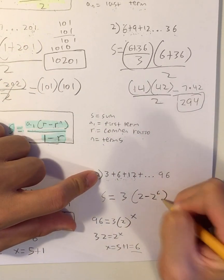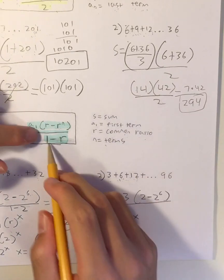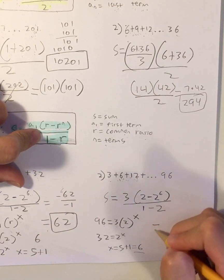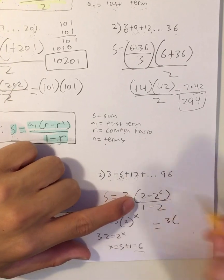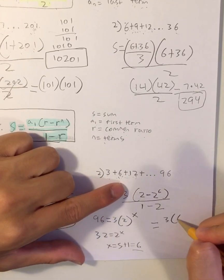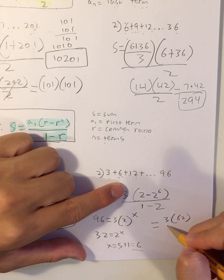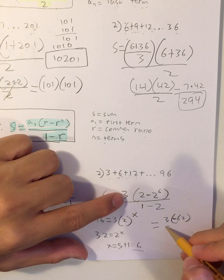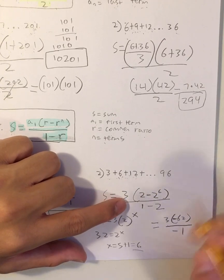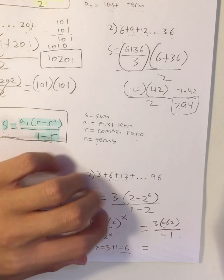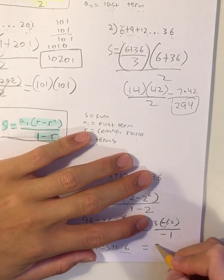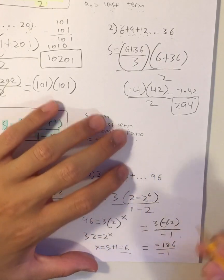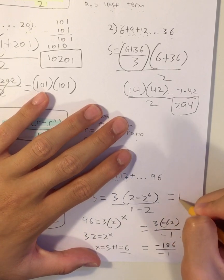So that's 2 to the 6 over 1 minus R, where R equals 2. Simplifying: 3 times 2 minus 64, which is negative 62, over negative 1. That gives negative 186 over negative 1, which is equal to 186.